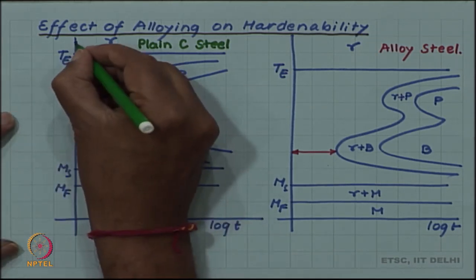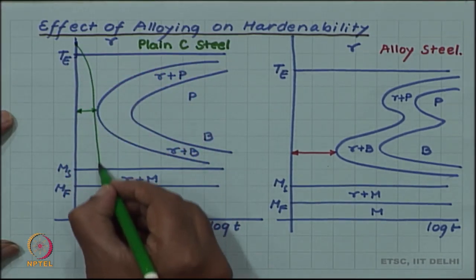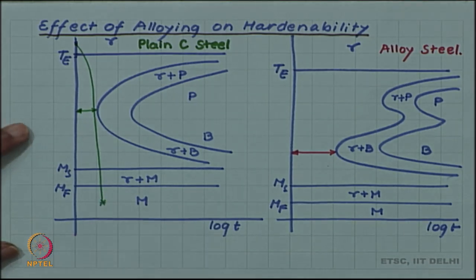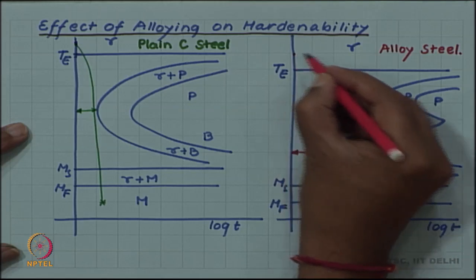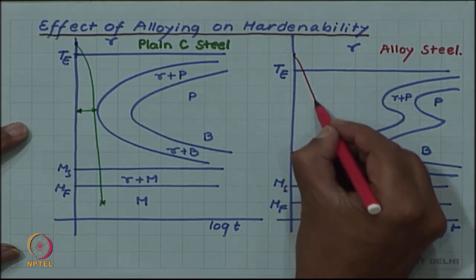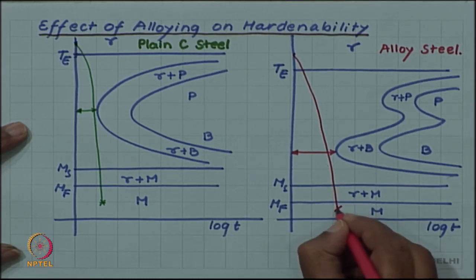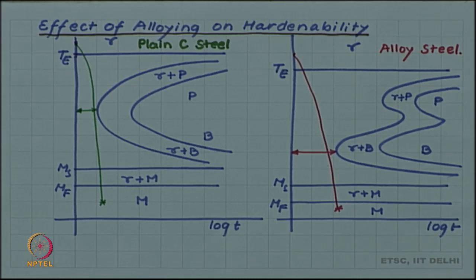We have to quench at a much faster rate to form martensite in plain carbon steel, whereas we can go a little slower to form martensite in alloy steel. An important conclusion from this is that alloying increases the hardenability of a steel.